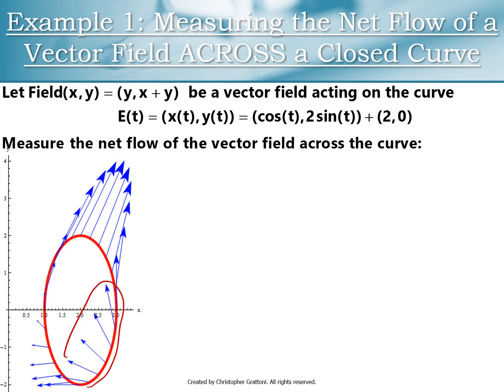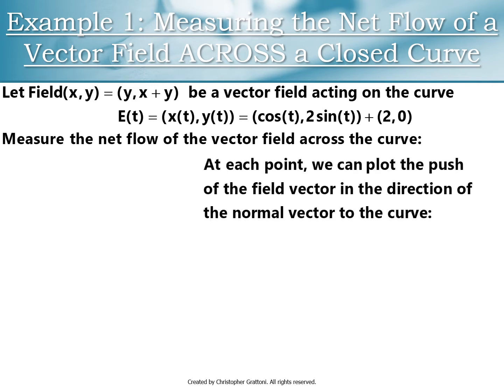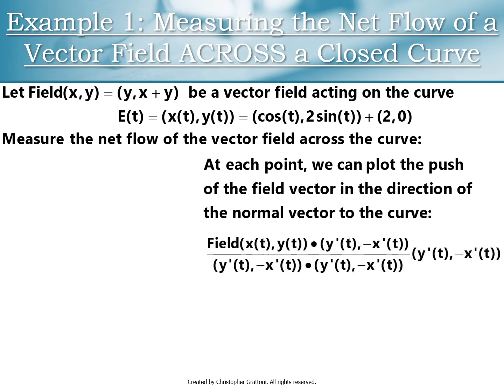I have some vectors that are pointing outside to inside and some vectors that are pointing inside to outside. So maybe I want a slightly better, more precise measure of the net flow of the vector field across the curve. I'm going to look at the component of the field vectors in the direction of the normal vectors — the projection of the field vectors onto the normal vectors: field dot normal over normal dot normal times the normal vectors. Here's a plot.